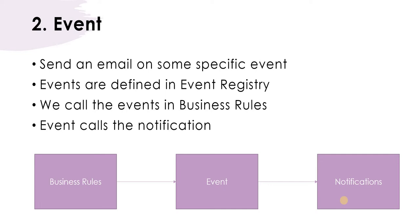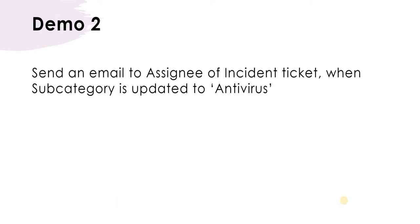In the demo, we will send an email to the assignee of the ticket when the subcategory is updated to antivirus. This is a straightforward use case and we could use the first method as well, but to demonstrate how events work and how we can send an email through this, we will take this simple example.